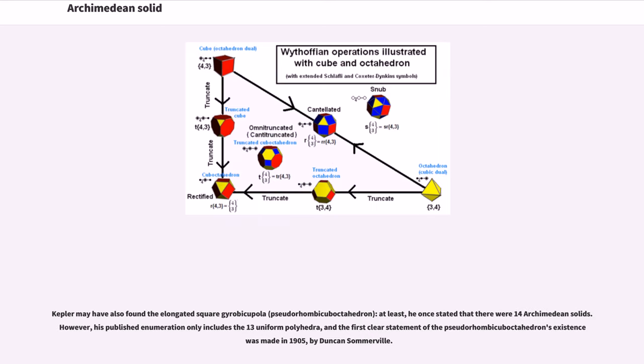Kepler may have also found the elongated square gyrobicupola, or pseudorhombicuboctahedron. At least, he once stated that there were fourteen Archimedean solids. However, his published enumeration only includes the thirteen uniform polyhedra, and the first clear statement of the pseudorhombicuboctahedron's existence was made in 1905 by Duncan Somerville.